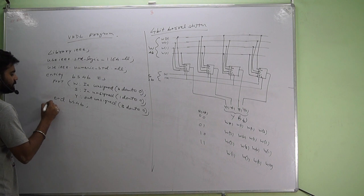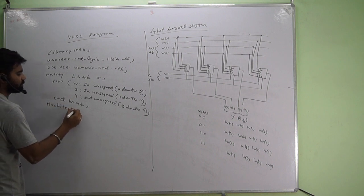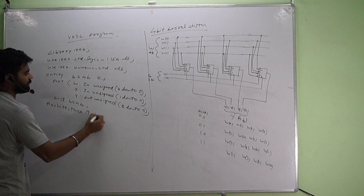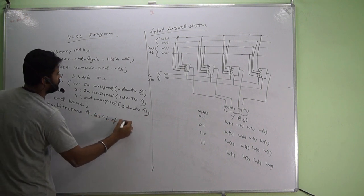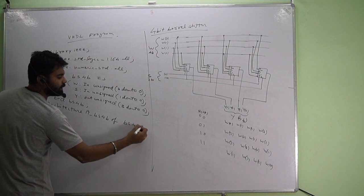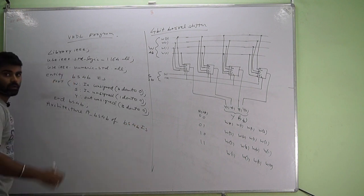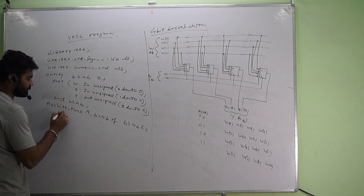Then architecture a underscore bs for b, let it be architecture name, whatever it is, of bs for b is. Now begin, then obviously process.